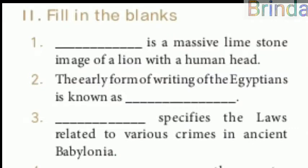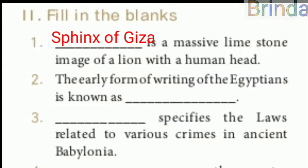Moving on to fill in the blanks. First: dash is a massive limestone image of a lion with a human head — the answer is Sphinx of Giza. Second: the early form of writing of the Egyptians is known as — the answer is hieroglyphic.